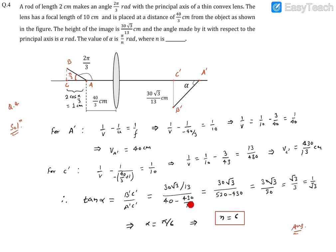After simplification, 13 cancels out. It becomes 30√3 divided by (520 - 430), which is 90 in the denominator. After simplification, it turns out to be 1/√3.